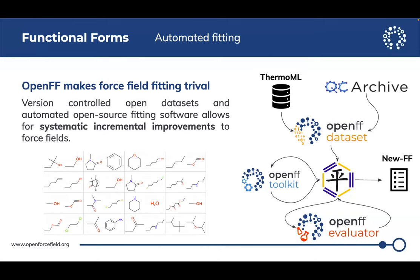A brief overview of the Open Force Field infrastructure: we pull data sets from ThermoML — that's where we get our physical properties. We've done a lot of work creating QM data sets for valence fitting, stored on QCArchive for anyone to access. We create data sets from that for fitting force fields, and we publish alongside our force fields like SAGE and Parsley. This all goes through ForceBalance, which does the actual fitting, and we've created tools like the OpenFF Evaluator and toolkit which help translate our force field into systems we can run in OpenMM. The idea is to make systematic, incremental improvements using this infrastructure.